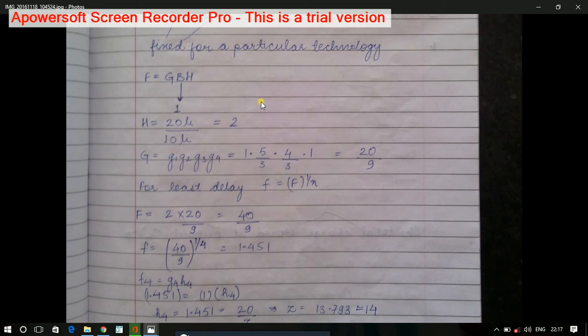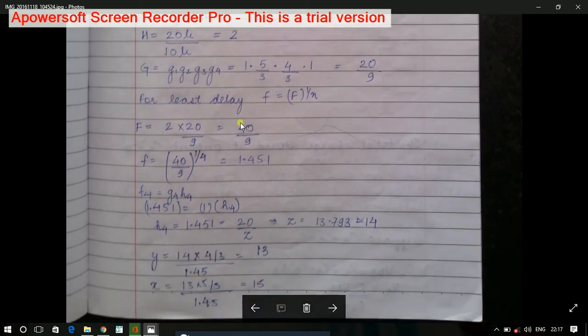Just multiply them: logical effort is 20/9, branching effort is 1, electrical effort is 2. So effectively, capital F becomes 40/9. Now, for the minimum possible delay...